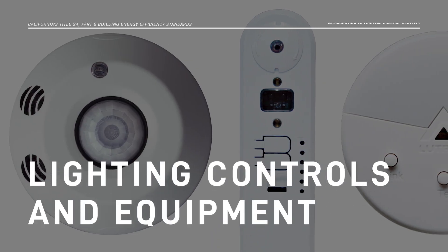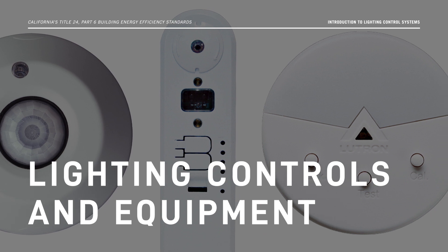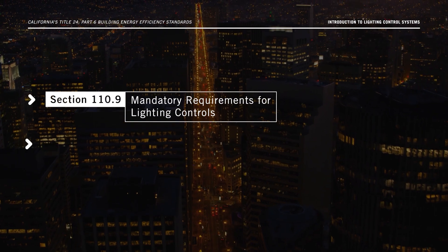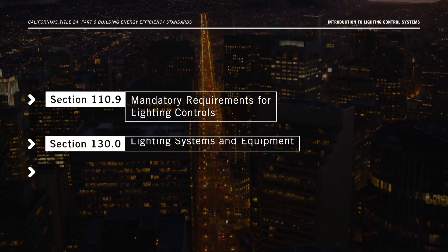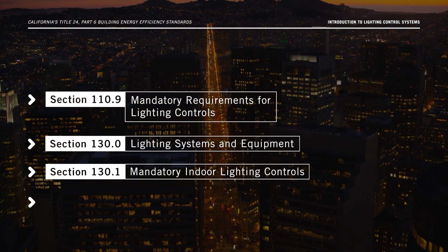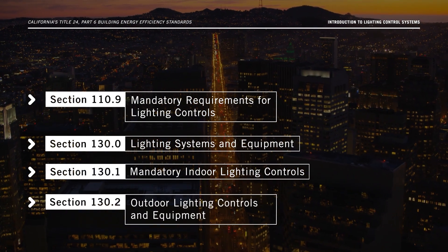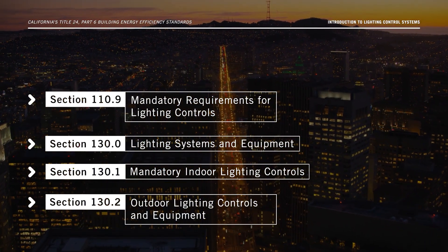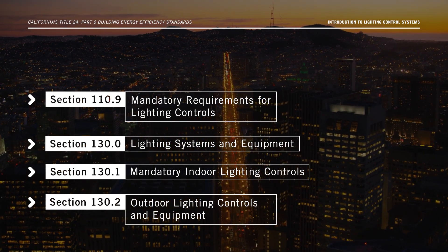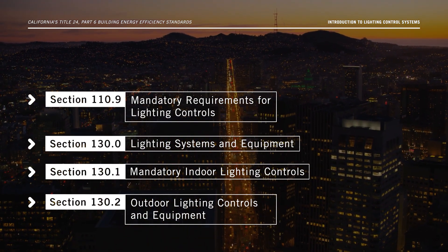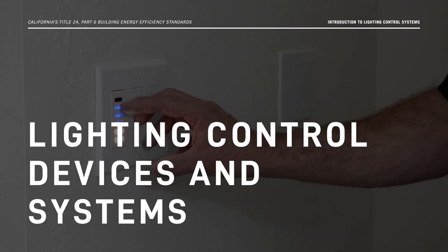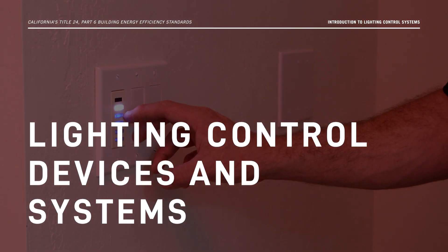Let's begin by talking about lighting controls and equipment. As you'll see in sections 110.9, 130.0, 130.1, and 130.2 of the Energy Code, they're required in order for non-residential, high-rise residential, hotel and motel buildings to be compliant. Next, let's talk about lighting control devices and systems.